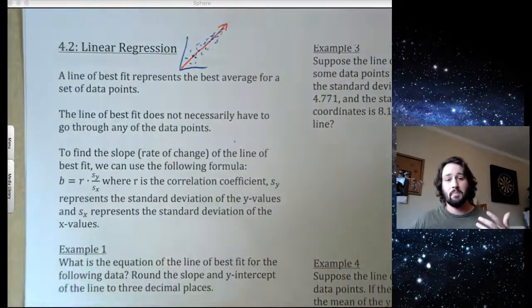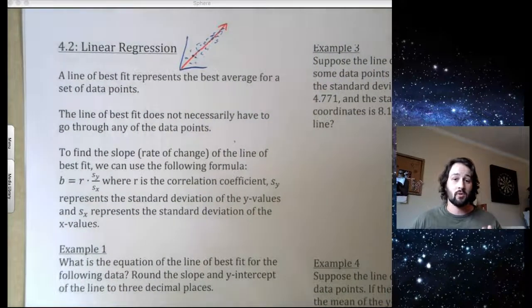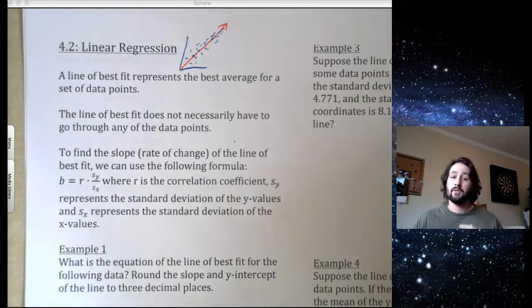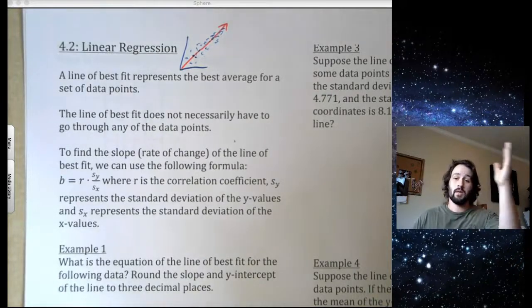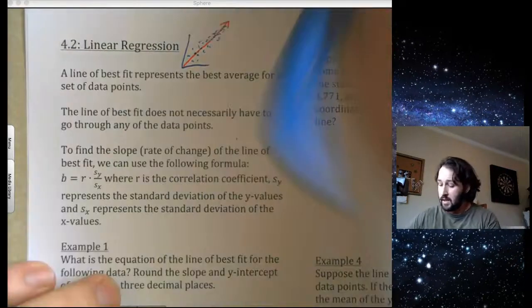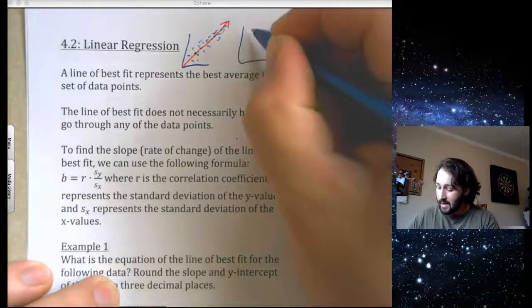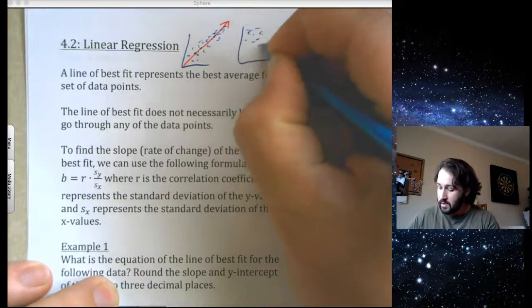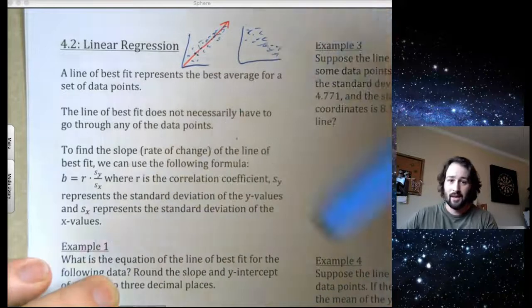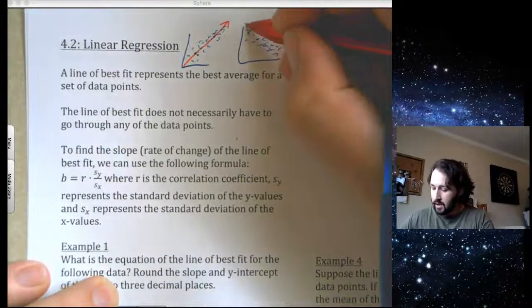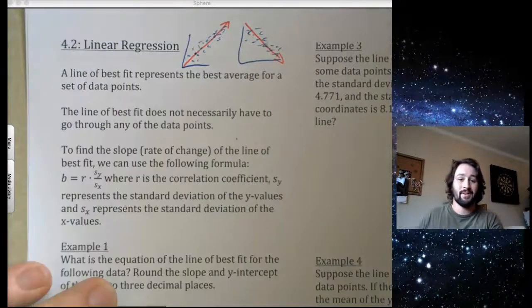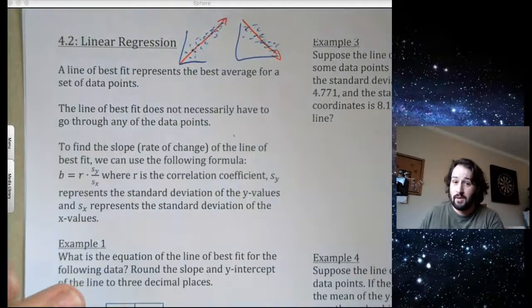This is called a positive correlation because the slope is positive. The higher the slope, the more that it's going to be slanted. If we have a set of data that has a bunch of points going down and we have a negative slope, that is called a negative correlation. That's really all that those things are.